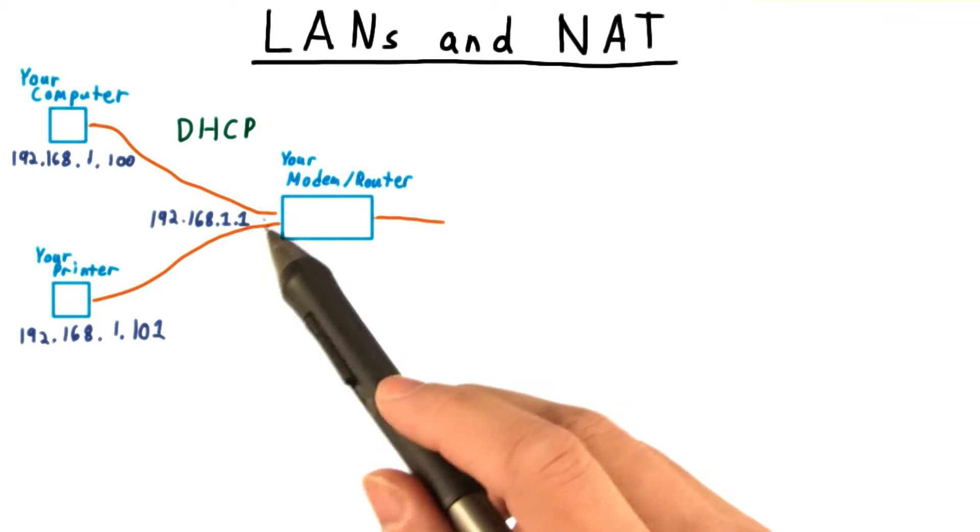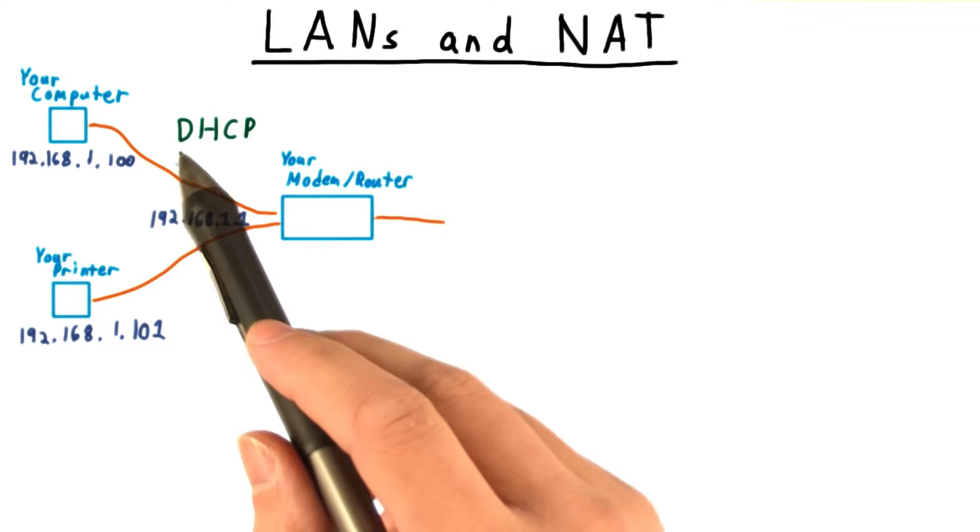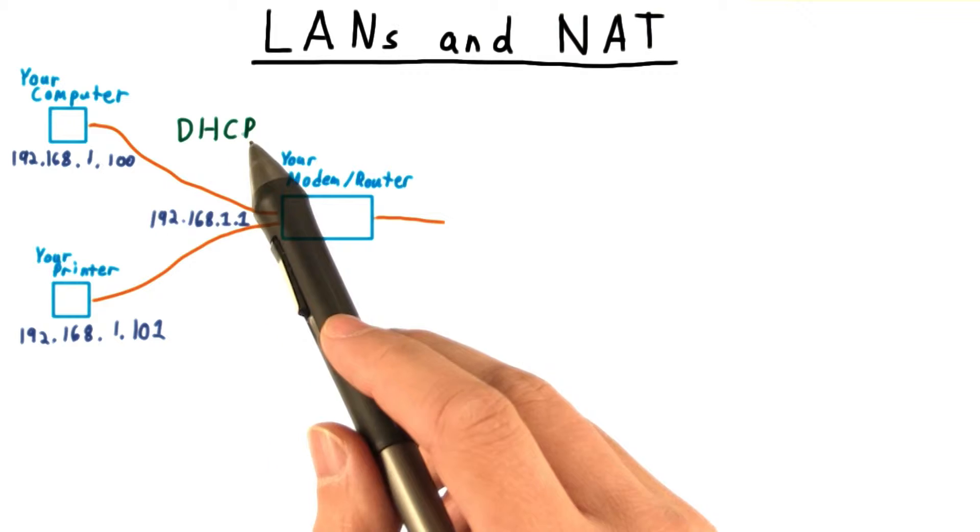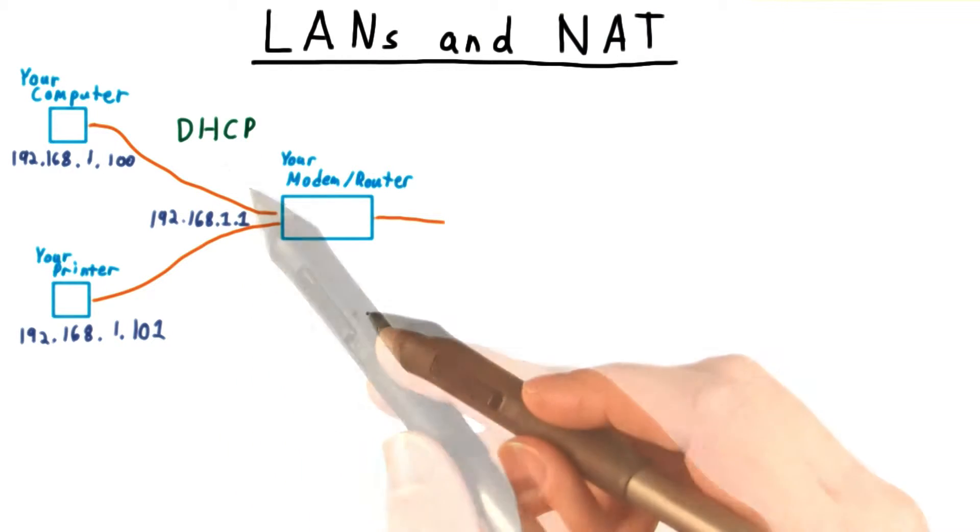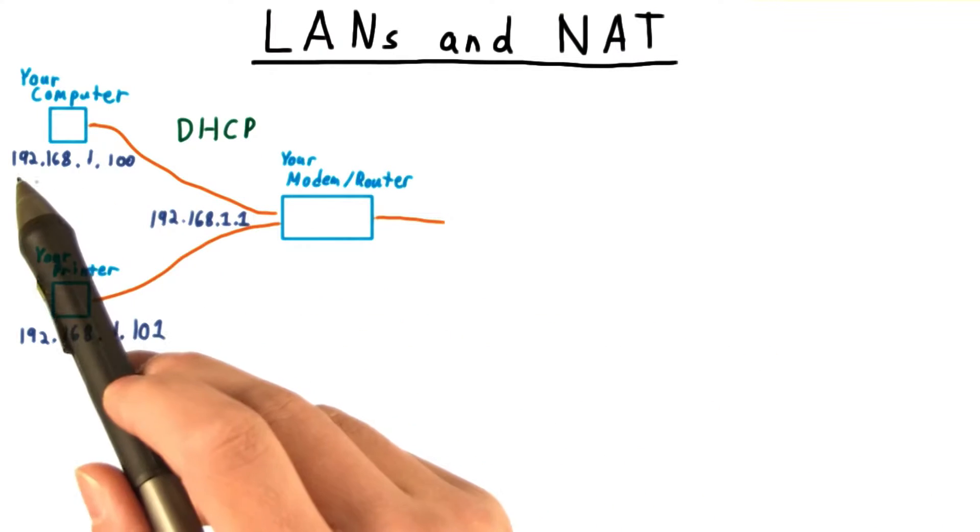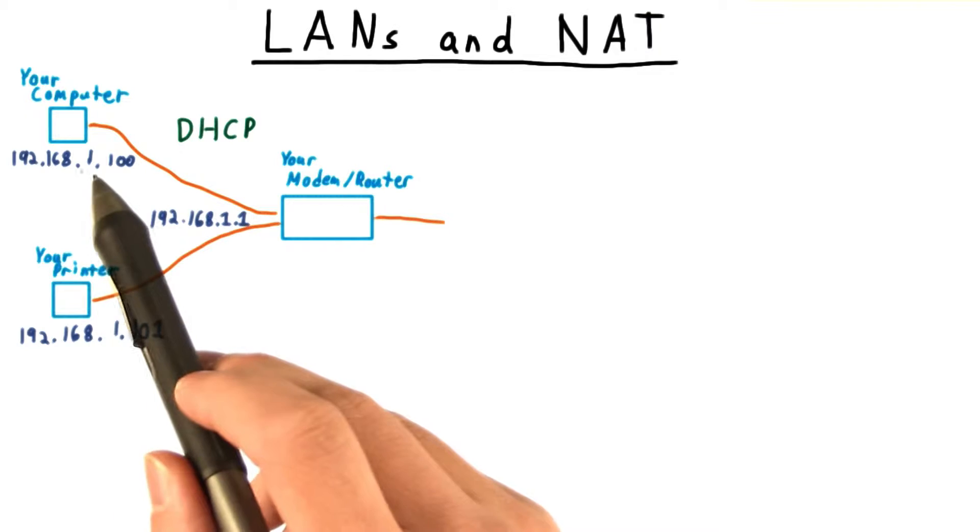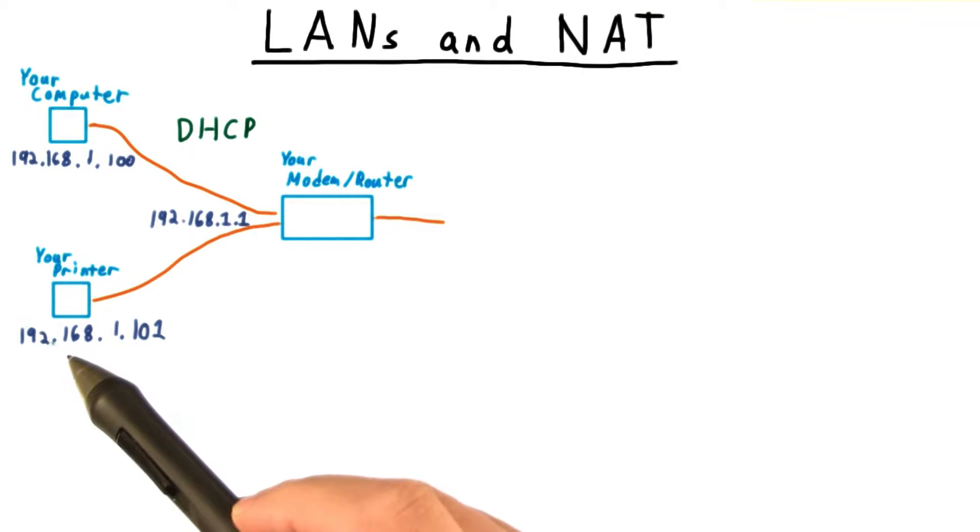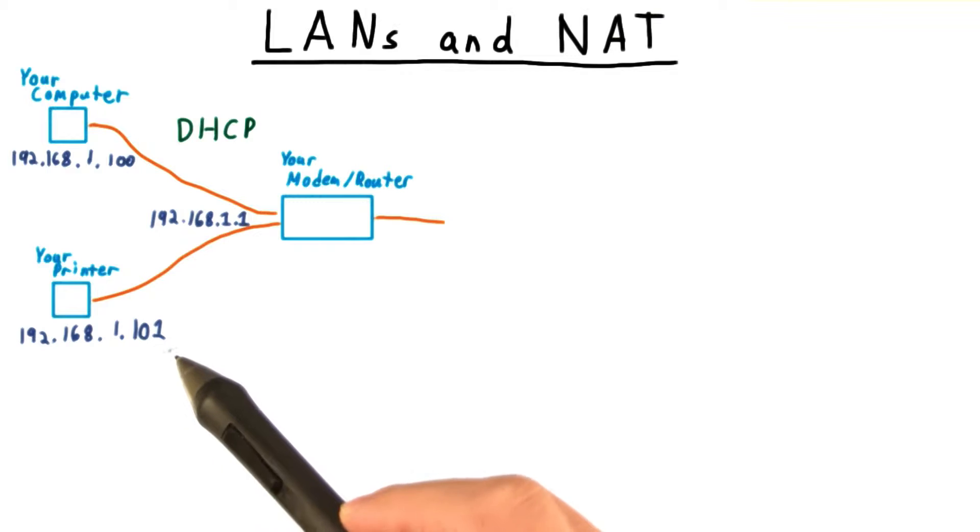Typically, the modem slash router will allocate IPs through a protocol called Dynamic Host Configuration, or DHCP. Let's say that your computer gets the address 192.168.1.100 and your printer gets 192.168.1.101.